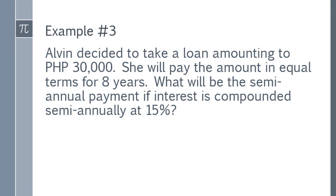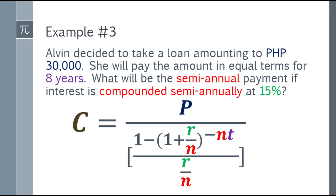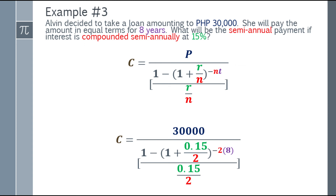Example number 3: Alvin decided to take a loan amounting to 30,000 pesos. He will pay the amount in equal terms for 8 years. What will be the semi-annual payment if interest is compounded semi-annually at 15%? Again, first step: write the formula. Next, substitute the values. Cash flow equals present value of 30,000 pesos over the complex fraction. That will be 1 minus the quantity (1 plus 0.15 over 2) — 0.15 because it's 15%, and 2 because it's semi-annual — with exponent negative 2 times 8, which is negative 16.